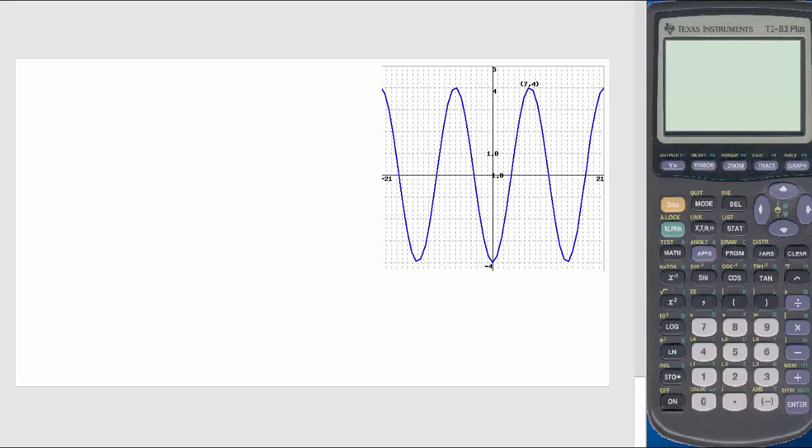We need to determine the function from the given graph. When you look at a graph like this, it will be either a sine function or cosine function. Usually, if we see an intercept on y where you see the symmetry, then we go with the cosine function. If it passes through the origin and we see the origin symmetry, then we use sine function.